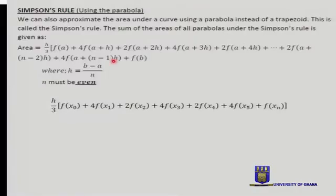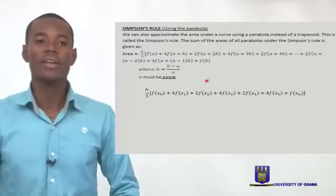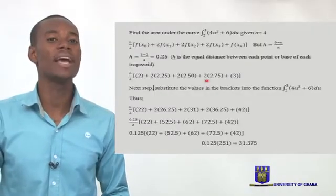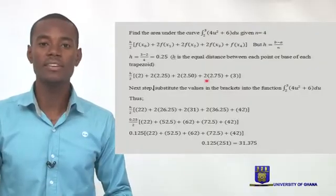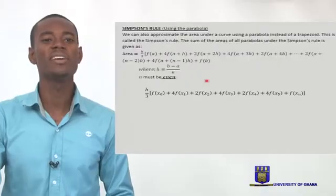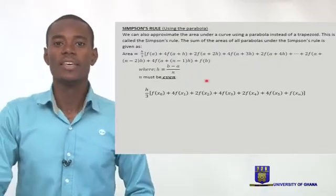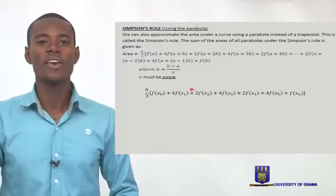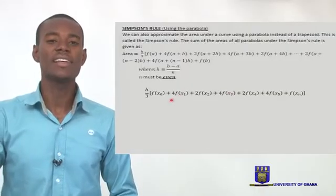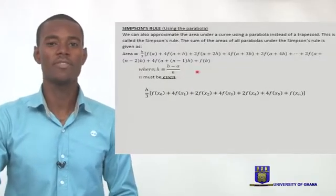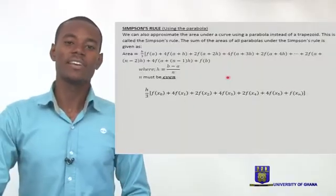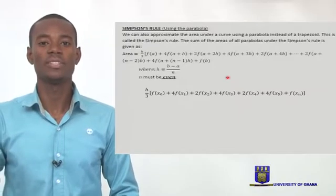Let's look at another rule — what we call Simpson's Rule, also another technique used to approximate the area under a curve. It follows the same idea as the trapezoid rule. The Simpson's Rule is born from the idea of fitting parabolas under the curve. If you want a specific area under a curve, you fit parabolas, and each parabola gives you three points.